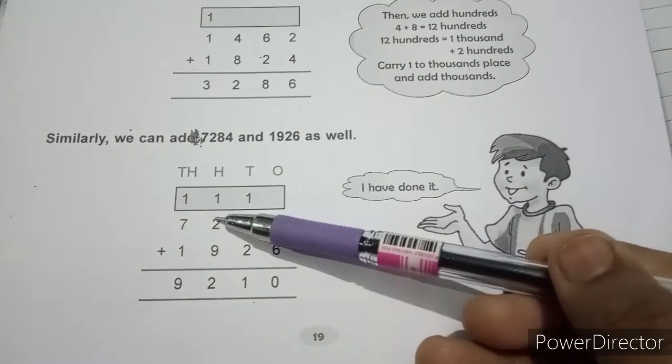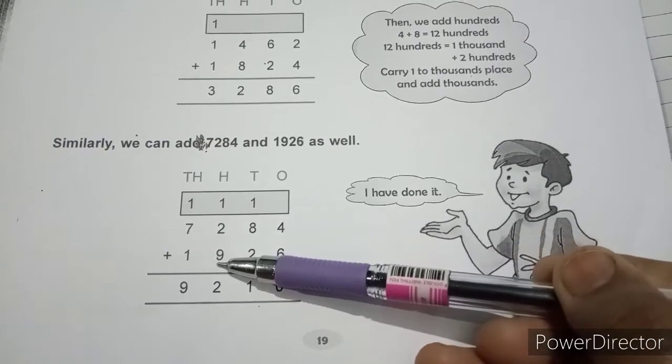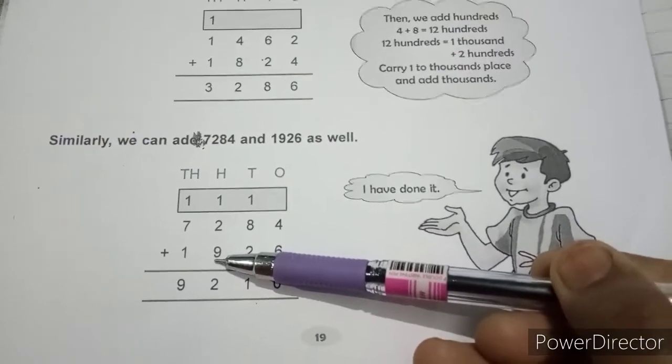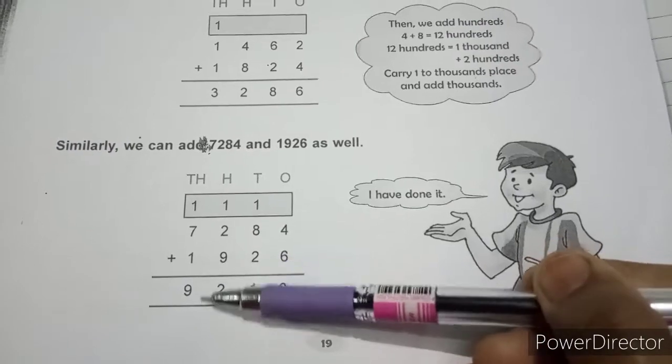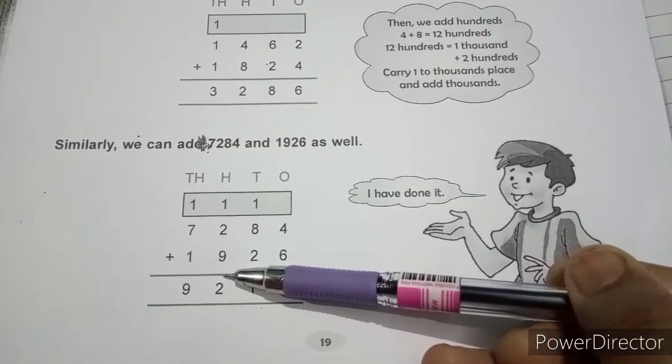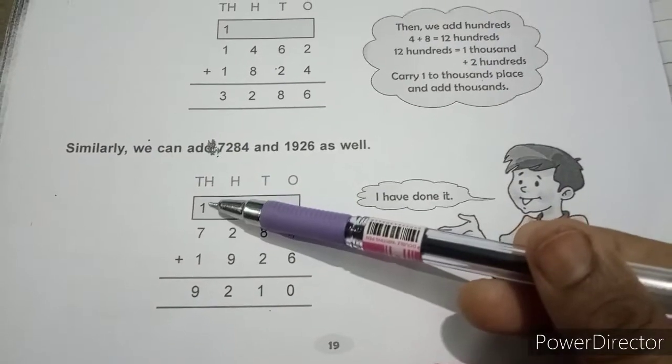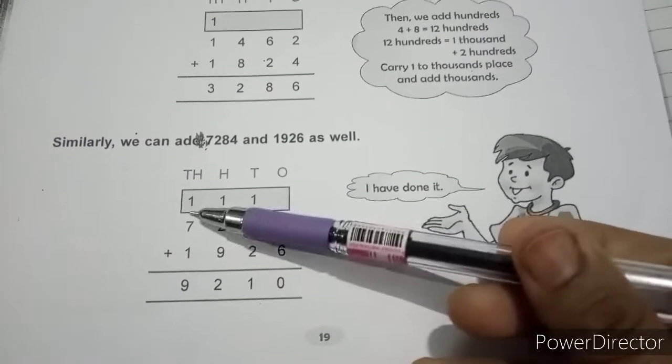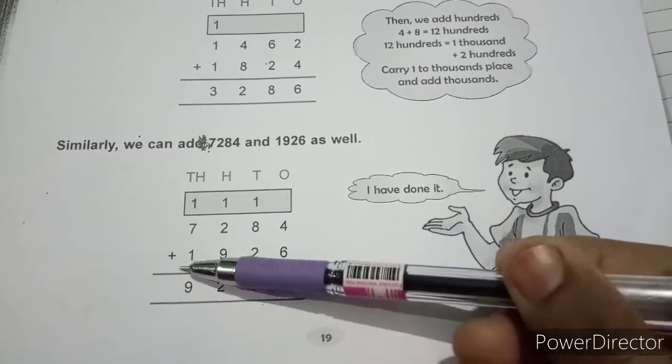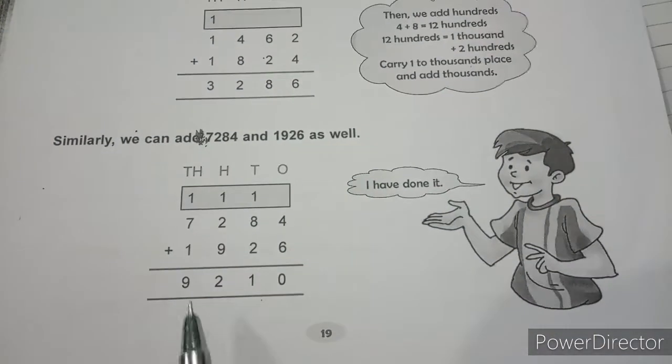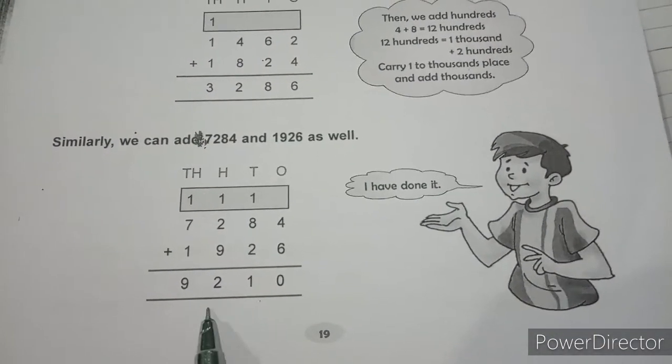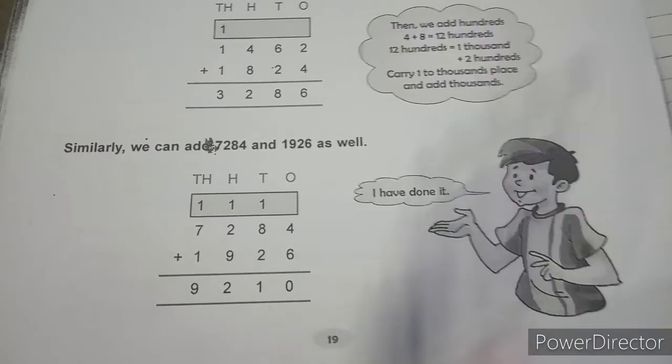Then when we add this number, 1 plus 2 plus 9, we get 12, which is 1200. Again, 1200 means that it is 1000 plus 200. So we have written 200, we carried 1000. Then when we are adding the numbers at thousands place, we get the number as 9. So our final answer is 9210.